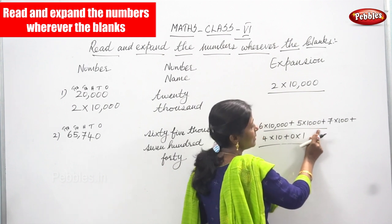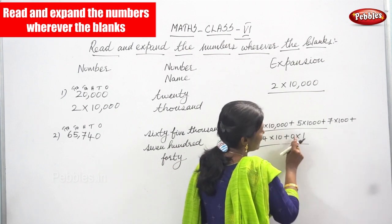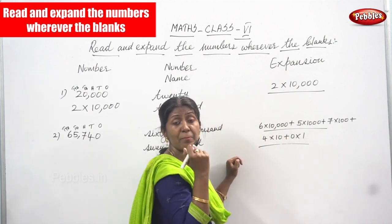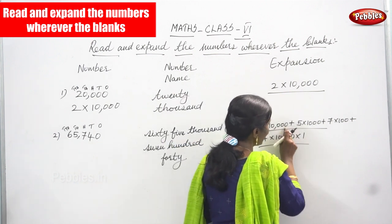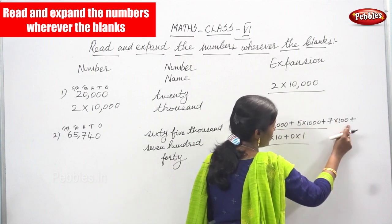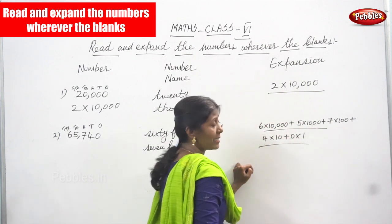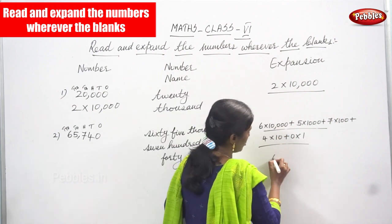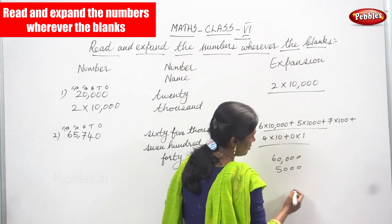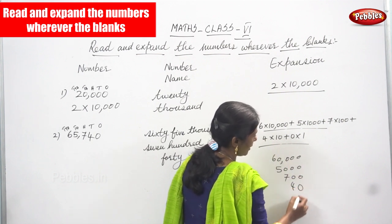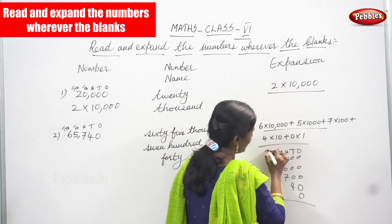So in expansion form: 6 into 10,000 equals 60,000, plus 5 into 1,000 equals 5,000, plus 7 into 100 equals 700, plus 4 into 10 equals 40, plus 0 into 1. Any number multiplied by 0 gives 0 only. So 0 into 1 gives 0. Place values are ones, tens, hundreds, thousands, ten-thousands.